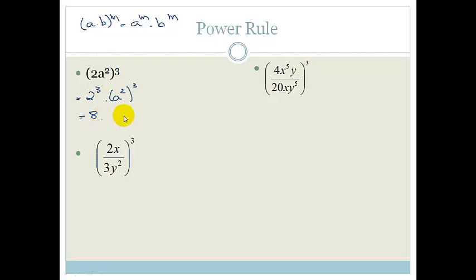So 2 cubed is 8, and then a to the power, a squared to the power of 3, remember what are we doing? We're just multiplying across the bracket. So what does that become? It becomes a to the 6th.